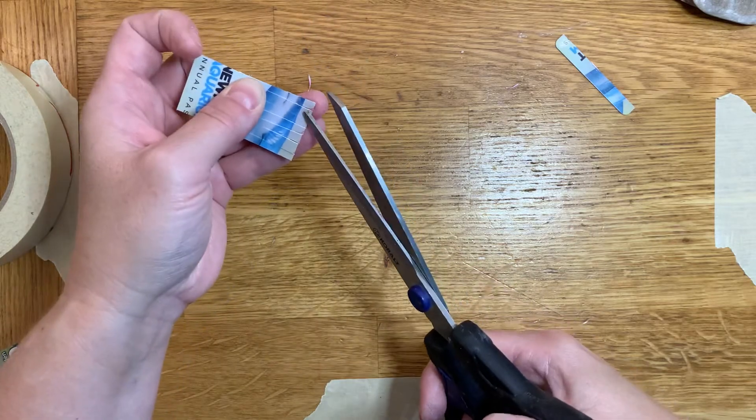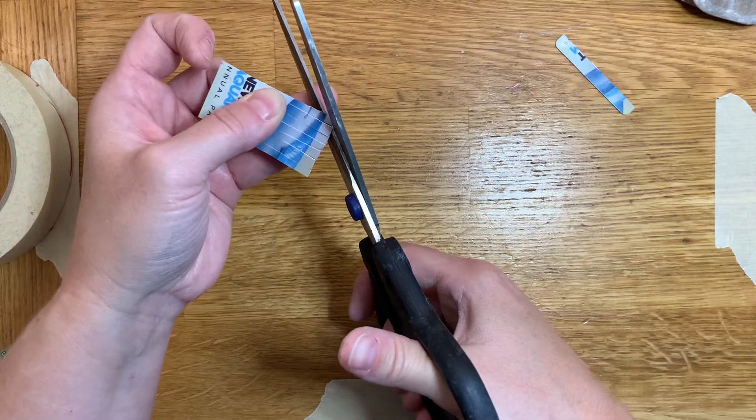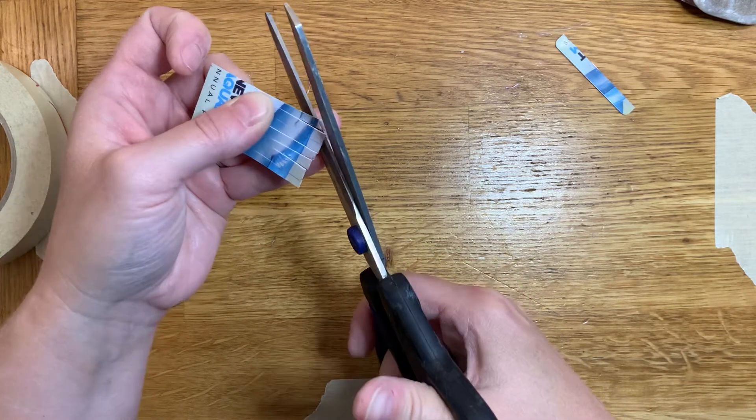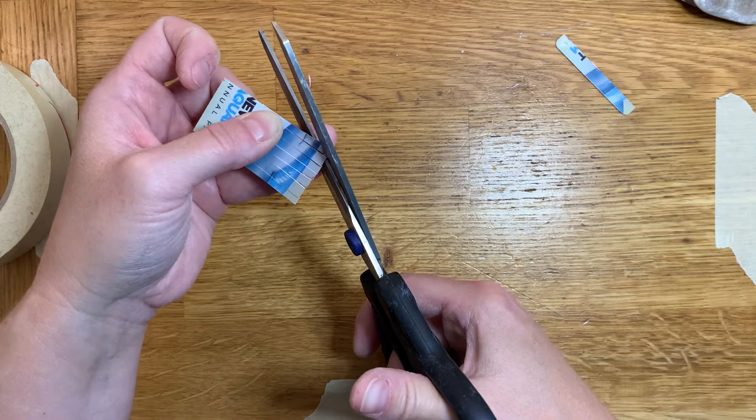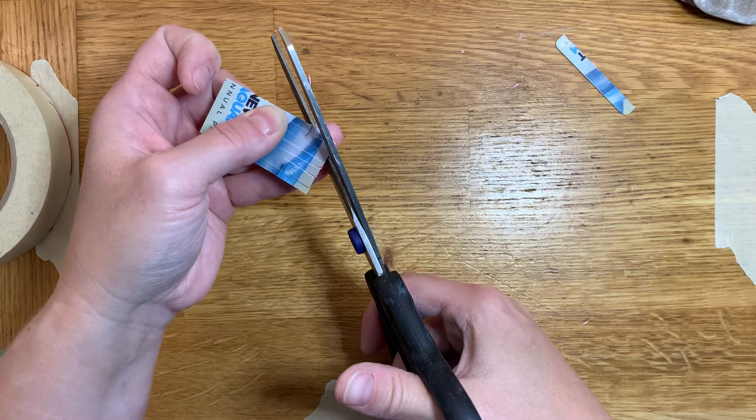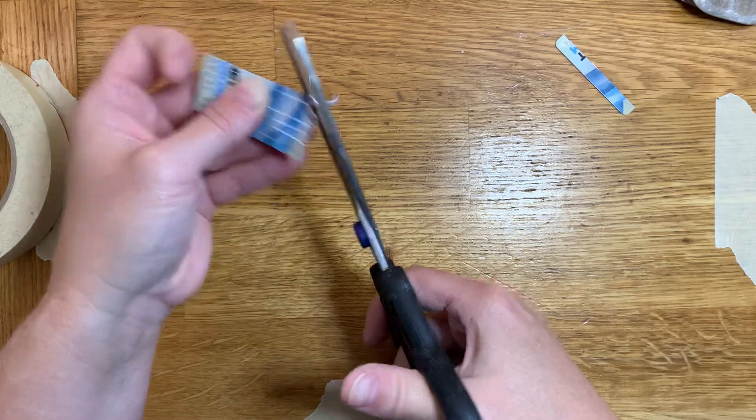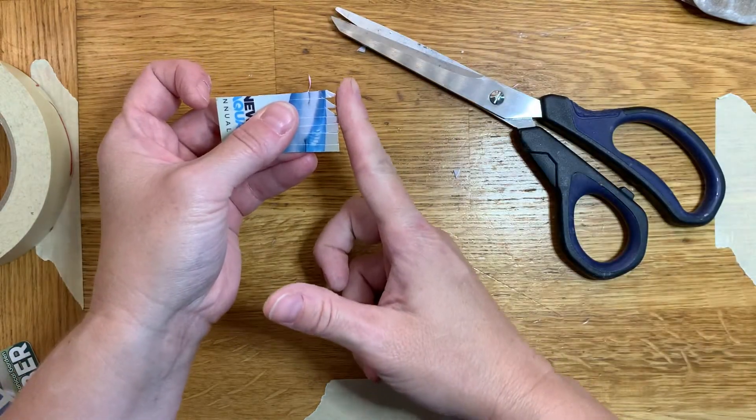And then for each one of these fringe pieces, I'm going to cut a slant. So I'm just going to use a diagonal cut, and I want to try to keep, oh see, I cut that one a little bit high. I'm going to try to keep the bottom corner at the very bottom edge so that they all have a little point at that same bottom edge there.